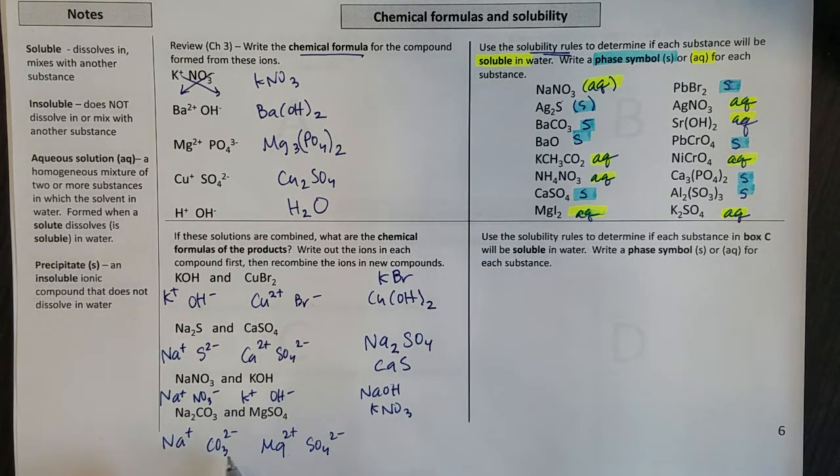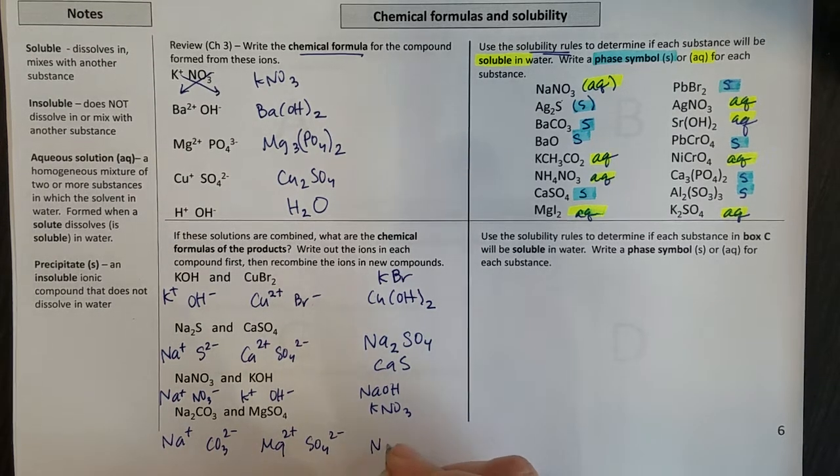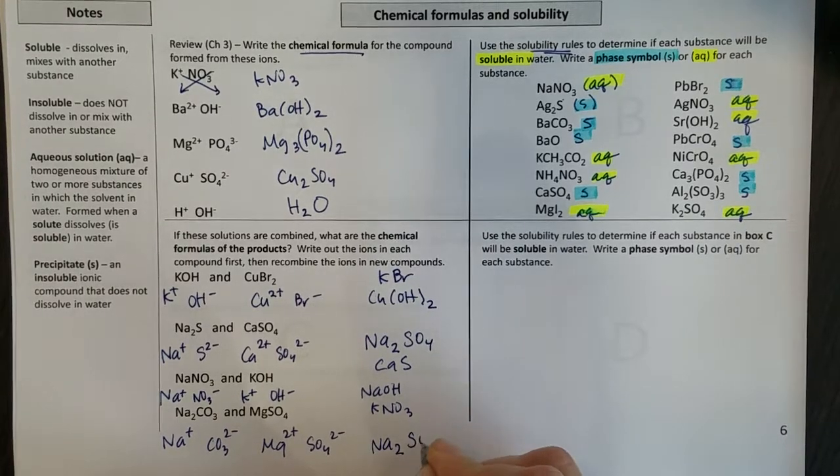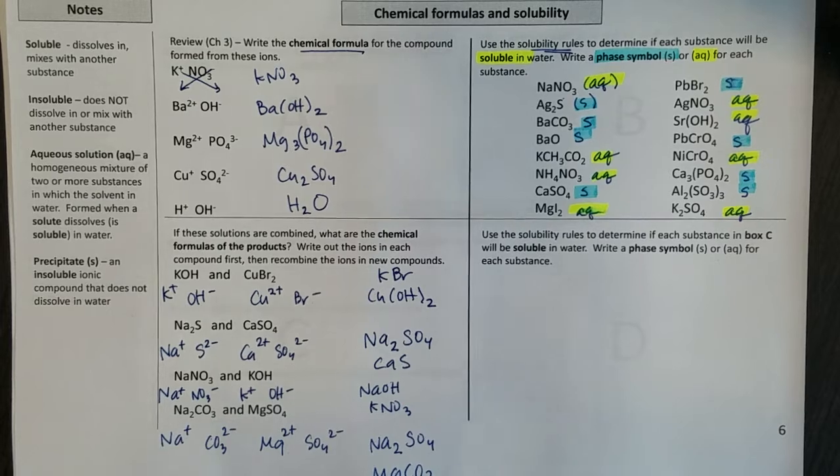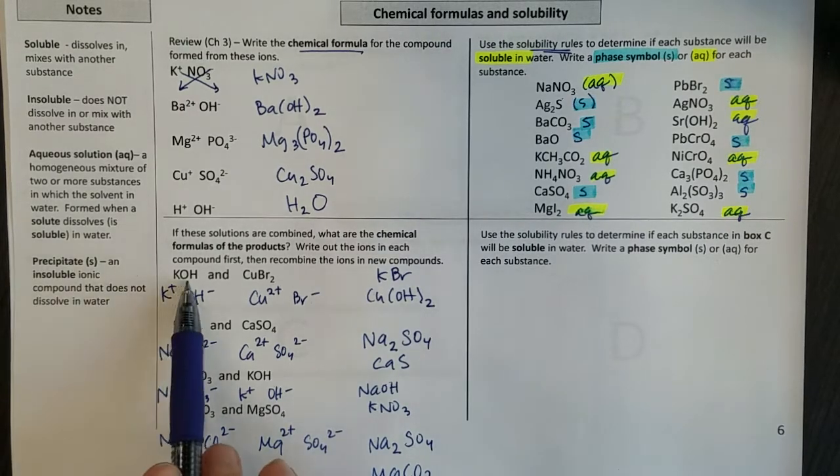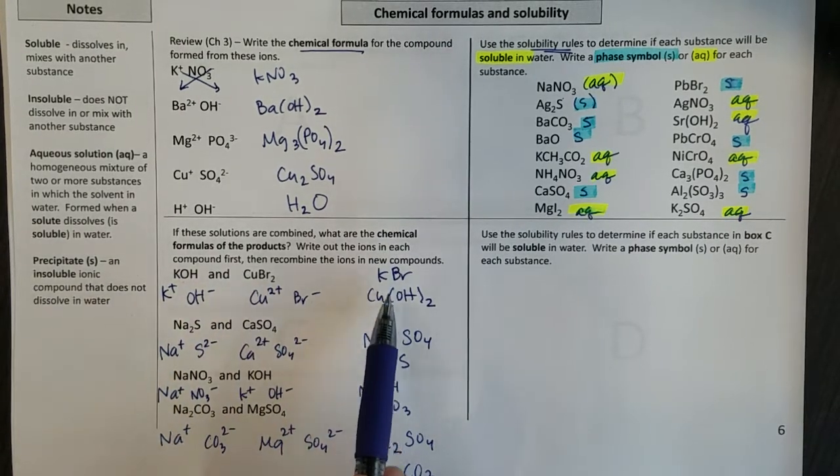My last one here, sodium combines with sulfate, magnesium with carbonate. So I end up with Na2SO4 and MgCO3. So if these two solutions reacted, these are the products we would get.